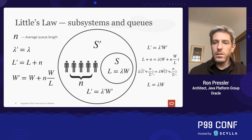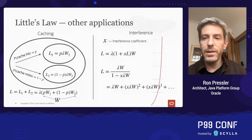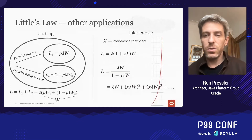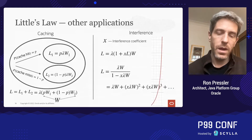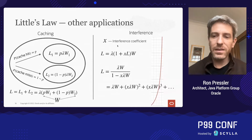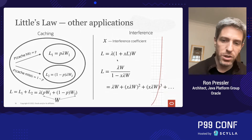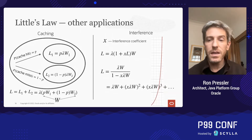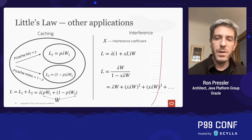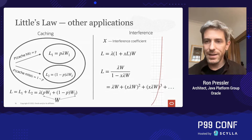We can also use Little's Law to consider cases where requests that hit a cache with probability p are very quick, while those that miss it take longer, and use that to size the cache appropriately for the system's capacity. Or we can use it to see the effect of interference among tasks — where the more requests that are in the system, the more they interact and slow each other down — and see why in all well-functioning servers the interaction among tasks must be low, that is, why they must be largely independent.